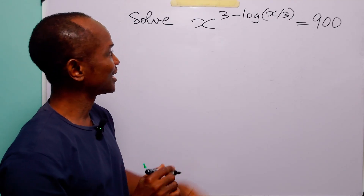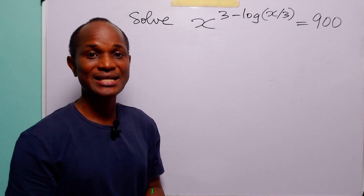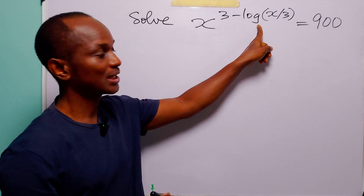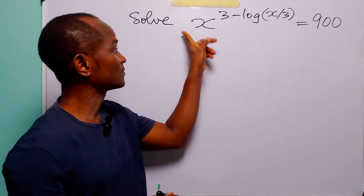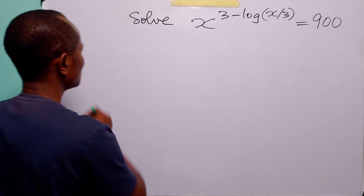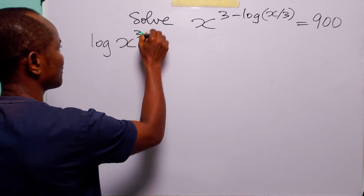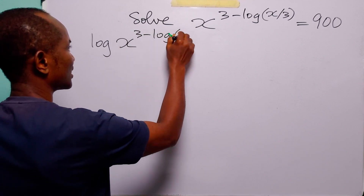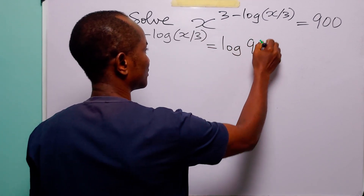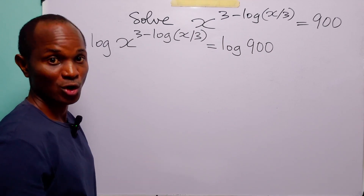Hello and welcome. In this math tutorial we have an exponential equation, and to solve this equation we must begin by taking log of both sides. Since we are already working in this term, we are going to take log of both the left hand side and the right hand side. When we do that, we have log x to the power 3 minus log x over 3 is equal to log 900.